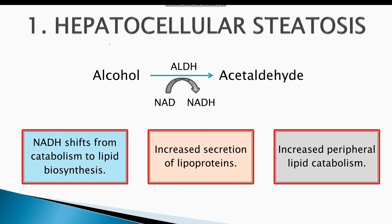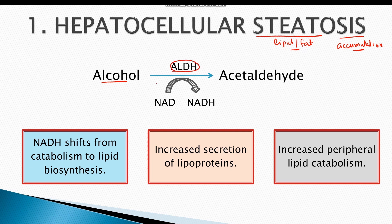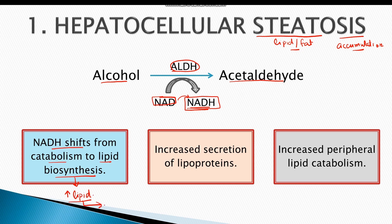The first phase is hepatocellular steatosis. 'Steato' means lipid or fat, and '-osis' means accumulation, so as the name suggests there is excessive accumulation of lipid inside the hepatocytes. Once alcohol enters the blood it is transported to the liver where it is metabolized. Alcohol dehydrogenase enzyme oxidizes alcohol and converts it into acetaldehyde, while NAD is reduced into NADH. Excessive alcohol consumption results in increased production of reduced NADH, which shifts the cells from lipid catabolism to lipid biosynthesis. As a result, there is increased production of lipids inside the cells, which accumulate in the liver cells resulting in steatosis. Moreover, alcohol also results in increased secretion of lipoproteins, which also add to the lipid concentration of the hepatocytes, resulting in steatosis.